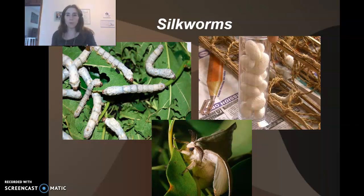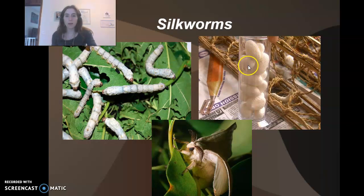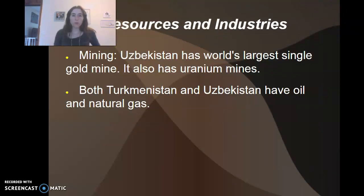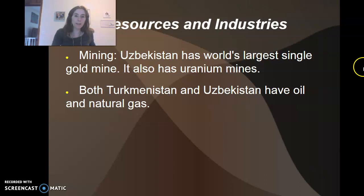Here are a couple of pictures to look at — silkworms. That's the worm, and that's what it becomes — a moth rather than a butterfly — and this is the pupa stage. Uzbekistan has the world's largest single gold mine and also has uranium mines. Both Turkmenistan and Uzbekistan have oil and natural gas.